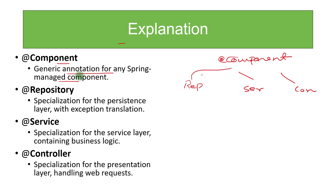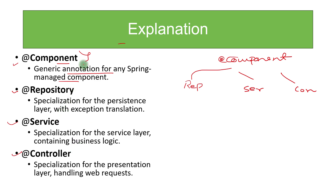These annotations are a way to create instances managed by Spring itself. Whenever we are creating any class in a Spring environment, an instance needs to be created, and these annotations are one of the ways we tell Spring to do that. @Component is a very generic annotation — if there are classes that don't fall into the category of repository, service, or controller, like utility classes, we use @Component.